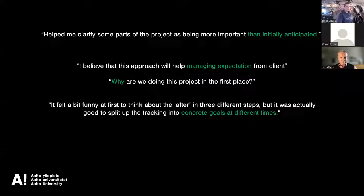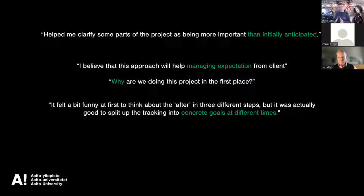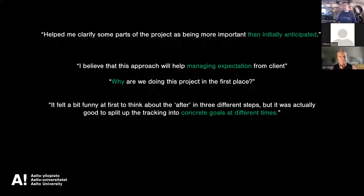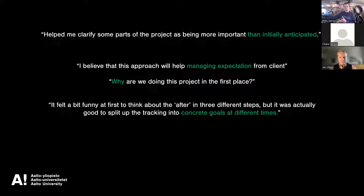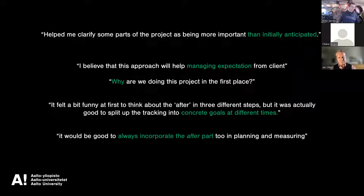'It felt a bit funny at first to think about the after in three different steps, but it was good to split up tracking into concrete goals at different times.' That was really showing that if you're doing good project management, you discuss and write down the desired impact. That impact can be chopped into three stages: ultimate impact, then what needs to happen in one year, six months, one month. It's classic expectations management, and now we start to see where the project goes next, so that success continues.